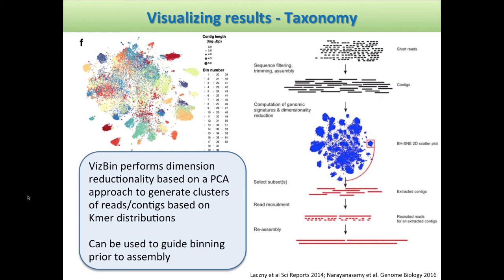There's also something interesting I came across recently: VizBin. This performs a dimensionality reduction — kind of like a PCA — to generate clusters of reads based on their k-mer distributions. The idea is that each of these clusters might represent sets of reads coming from the same organism. This could help guide binning prior to assembly, and it gives you a kind of overview of what your sample might look like in terms of its k-mer distributions.